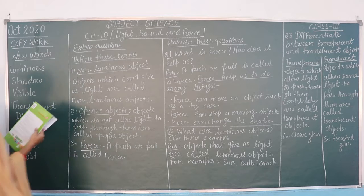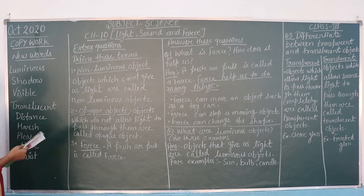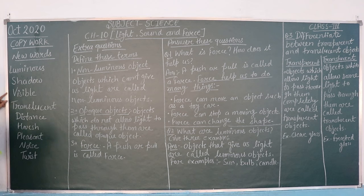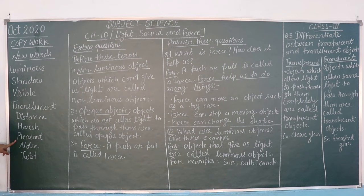Now first we will start with new words. First word is goodness, shadow, visible, canceling, distance, harps, pleasing, noise and twist.